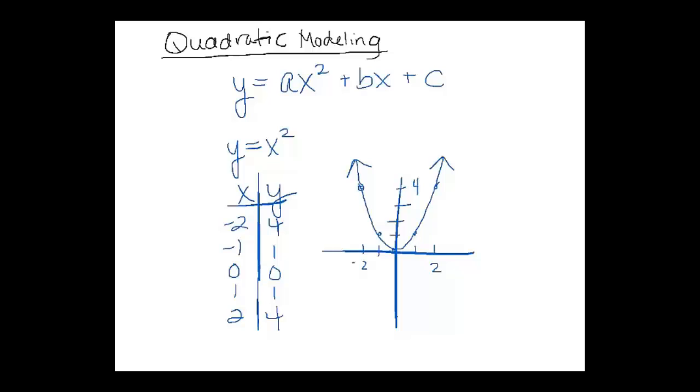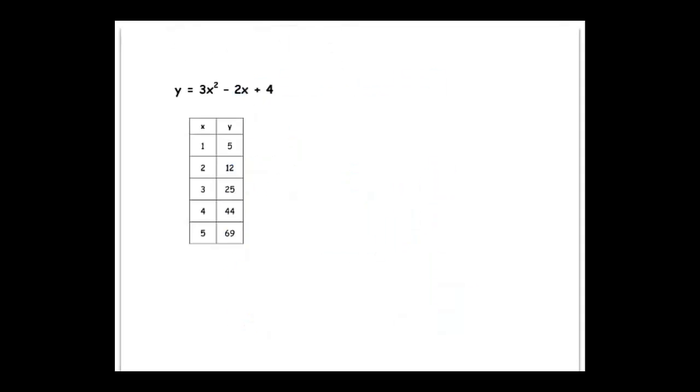So what if it's not so straightforward? What if it's not y equals x squared? Let's take a look at another one. So here's a quadratic function. I've already made a table for you. And if you wanted to make that table, obviously you would just substitute the values 1, 2, 3, 4, 5 in for x.